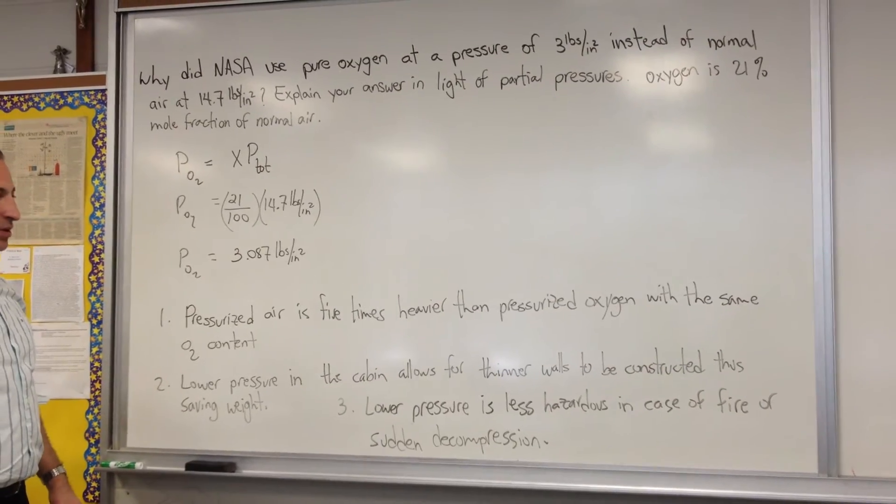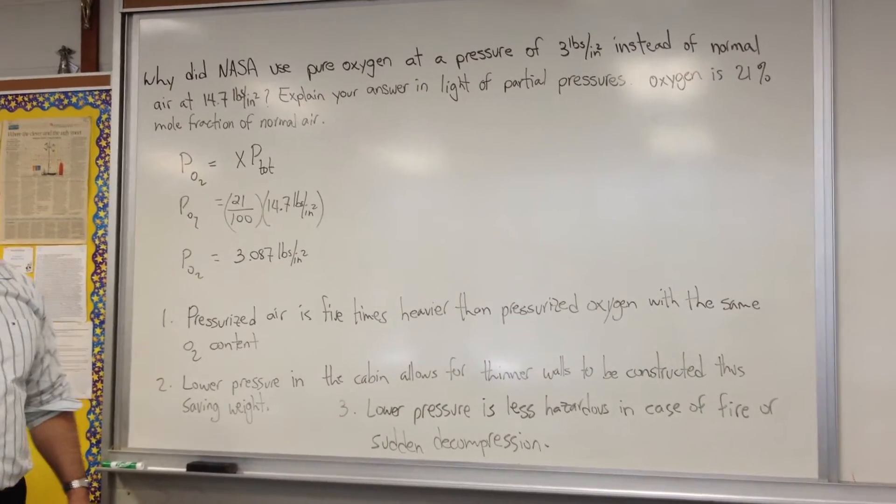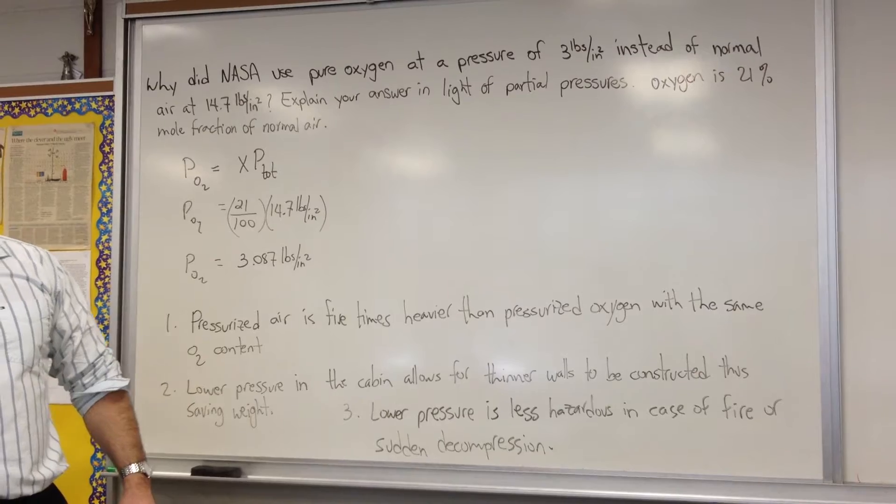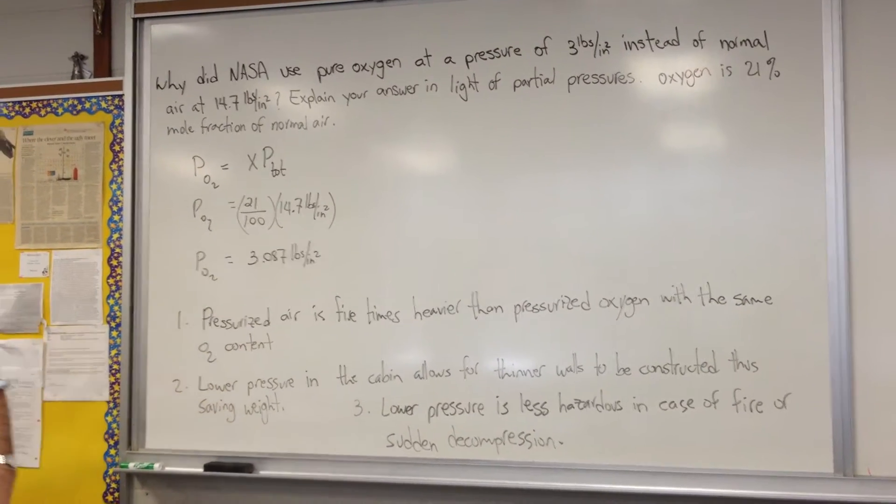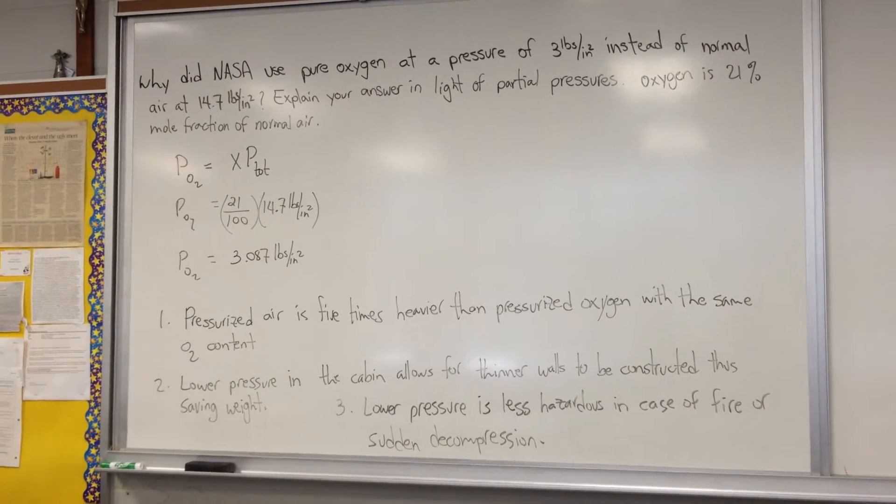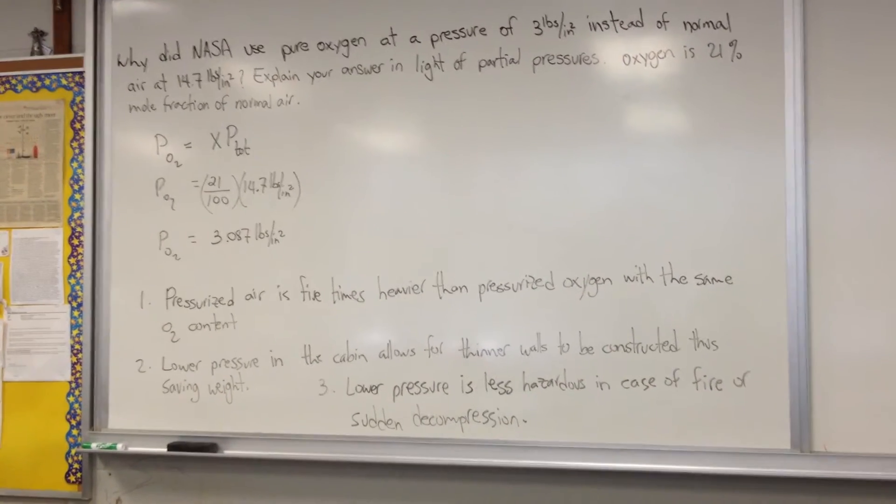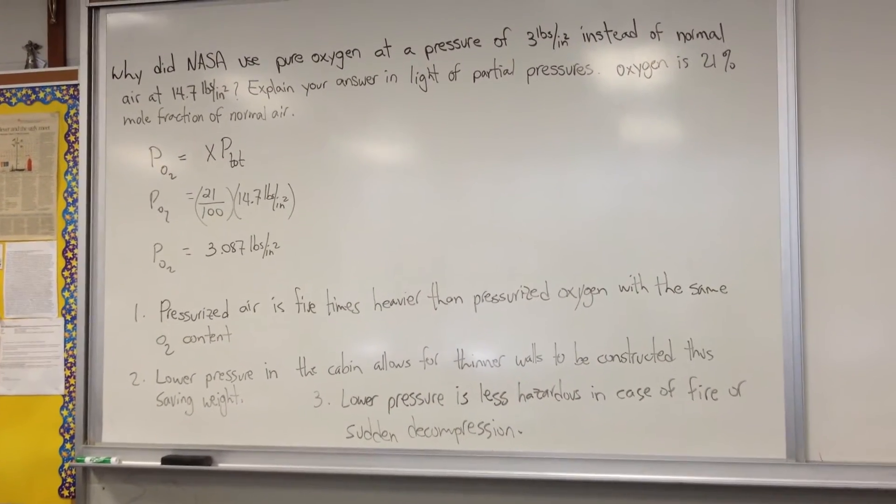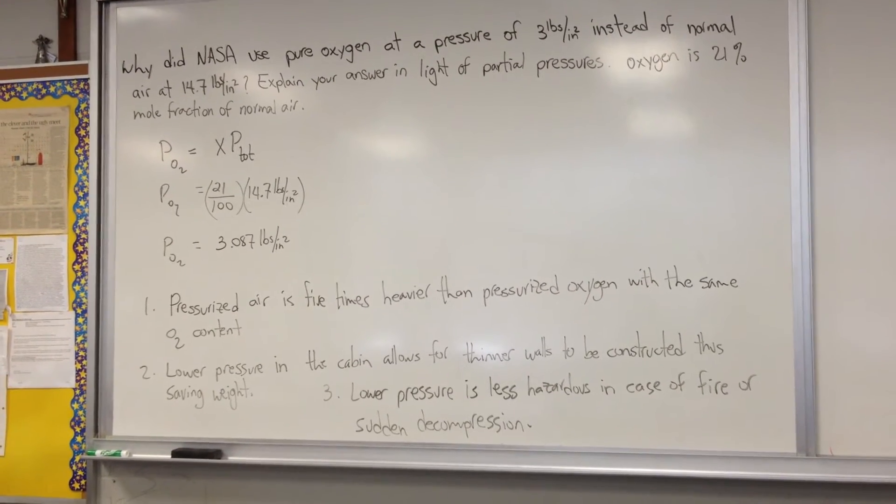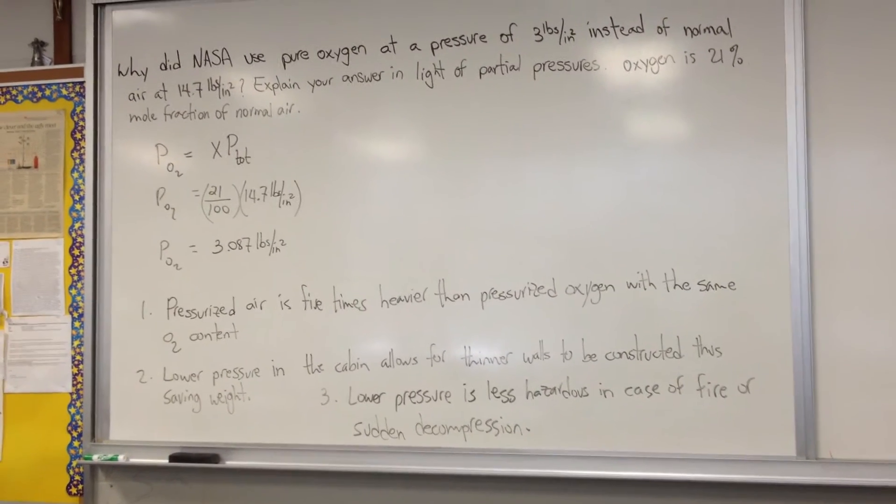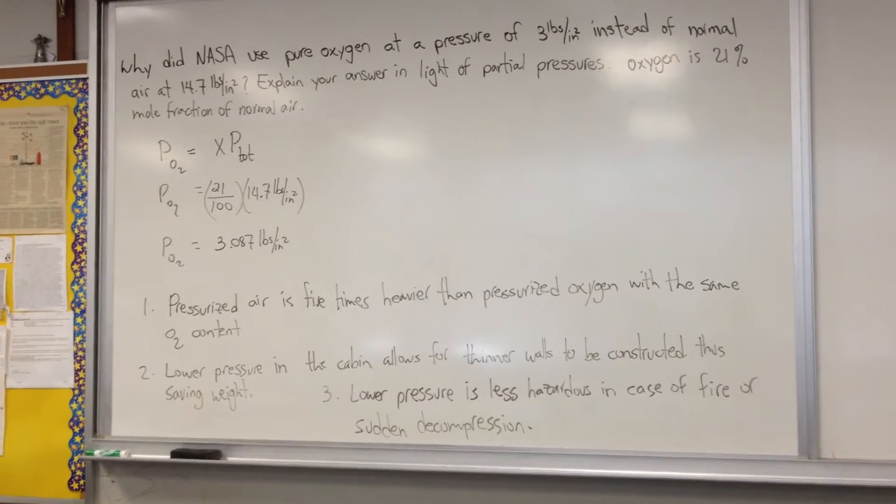So what NASA decided to do, instead of putting regular air into the lunar landing module, they decided to put pure oxygen at a pressure of 3 pounds per square inch. So the astronauts were getting the same amount of oxygen, but they had an advantage having a lower pressure inside the cabin.